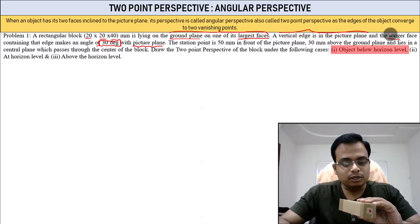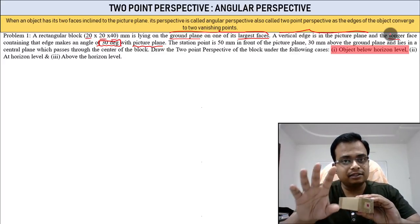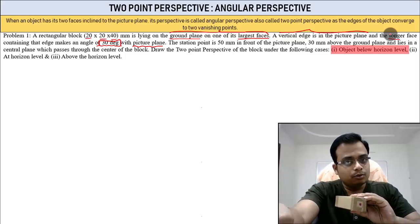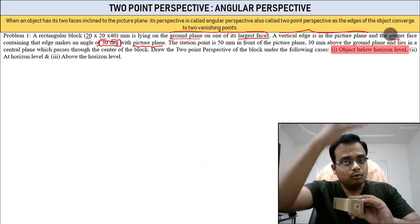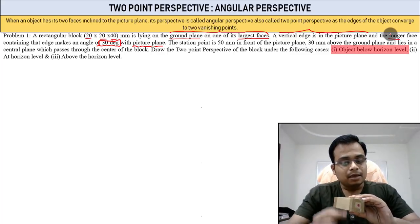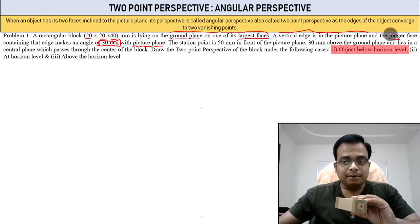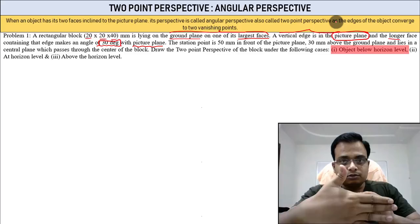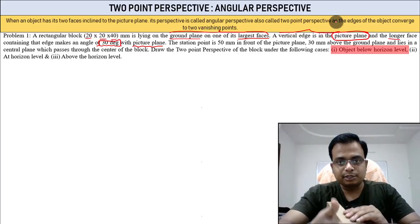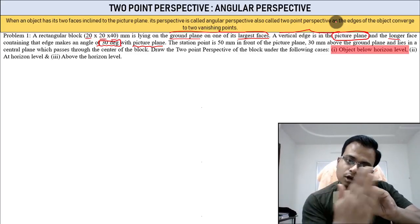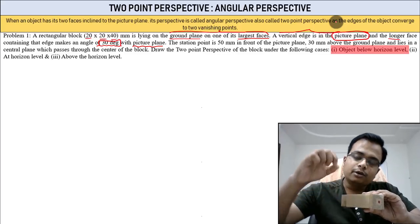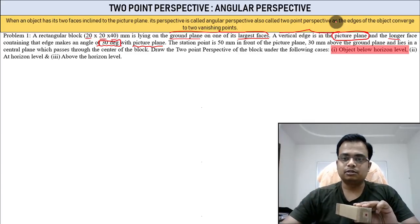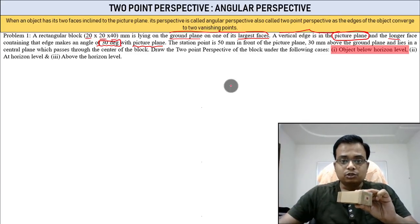This is basically how the object has been positioned. You are the observer watching from the front. In between you and the object there is a picture plane. One edge is in contact with the picture plane, and at the same time this longer face makes an angle of 30 degrees with the picture plane.